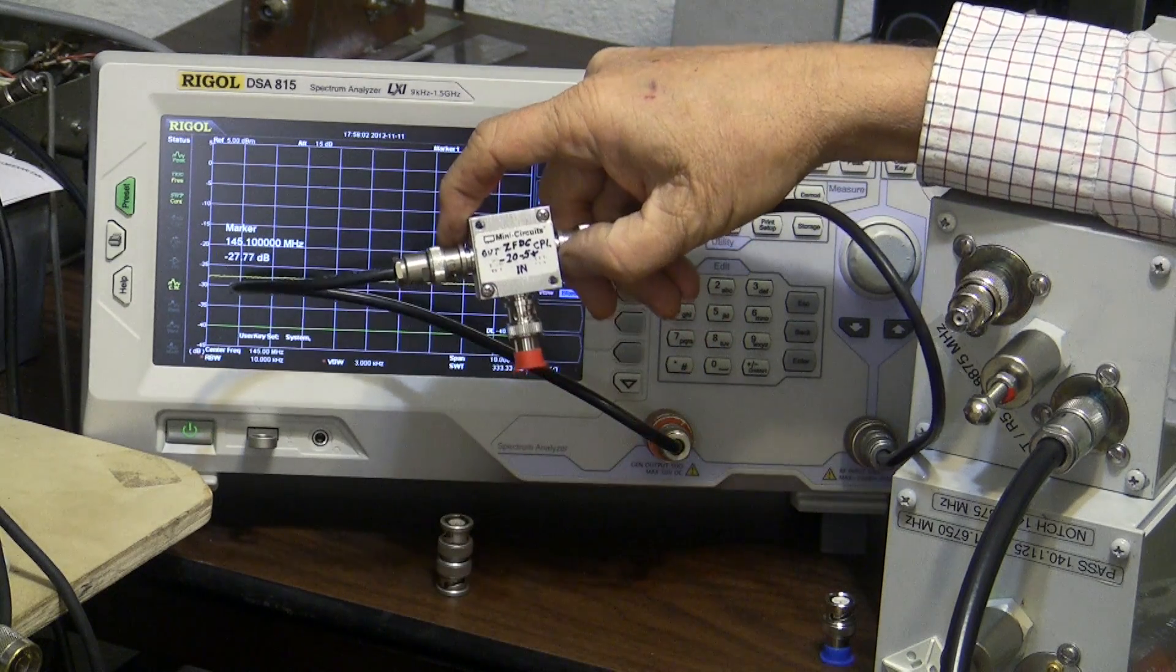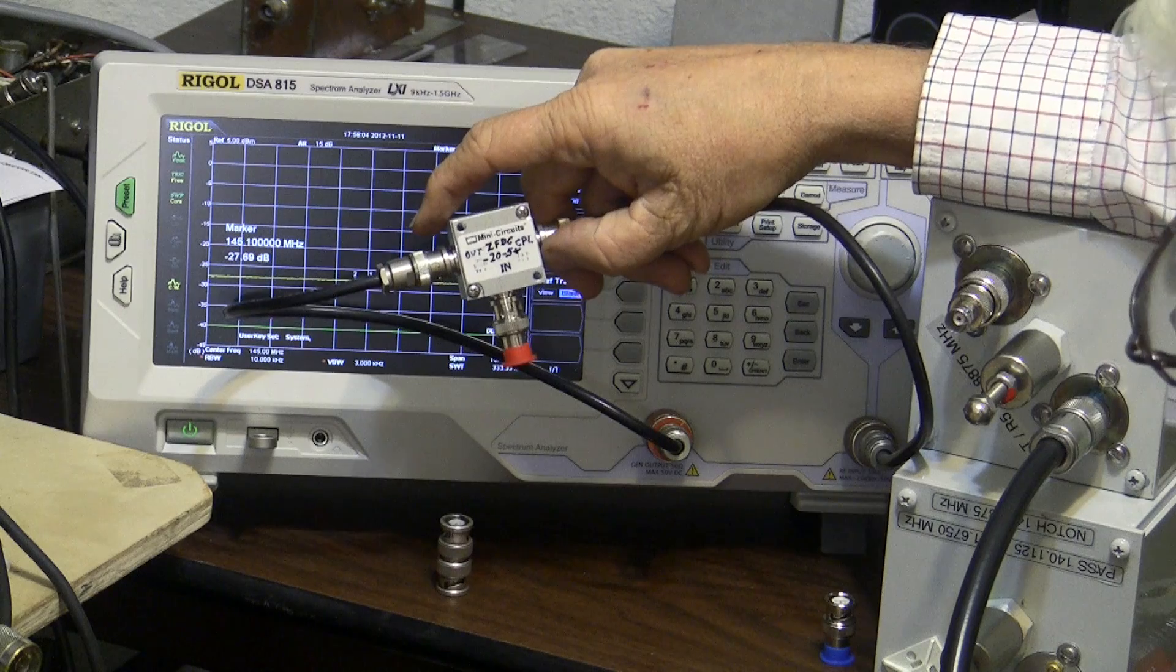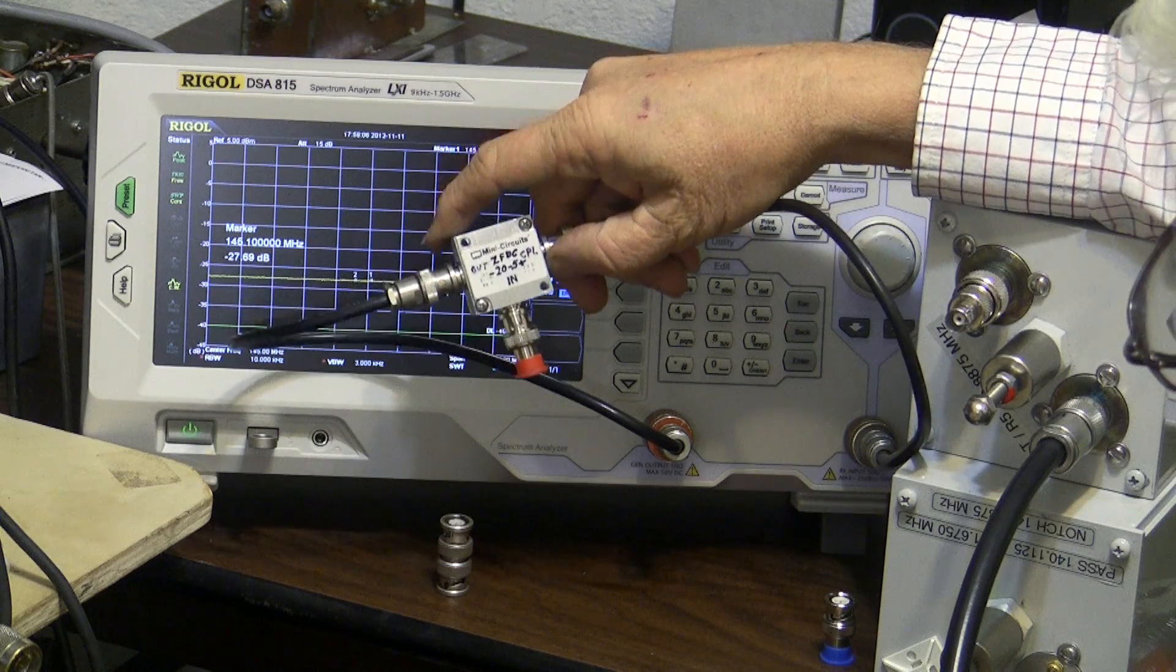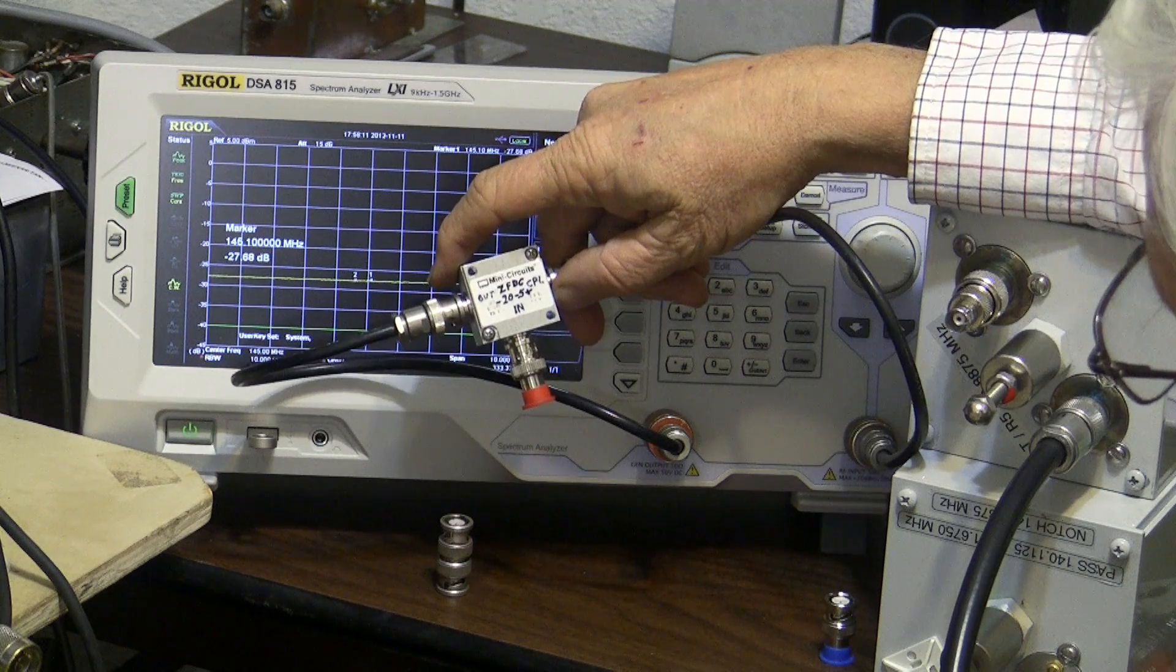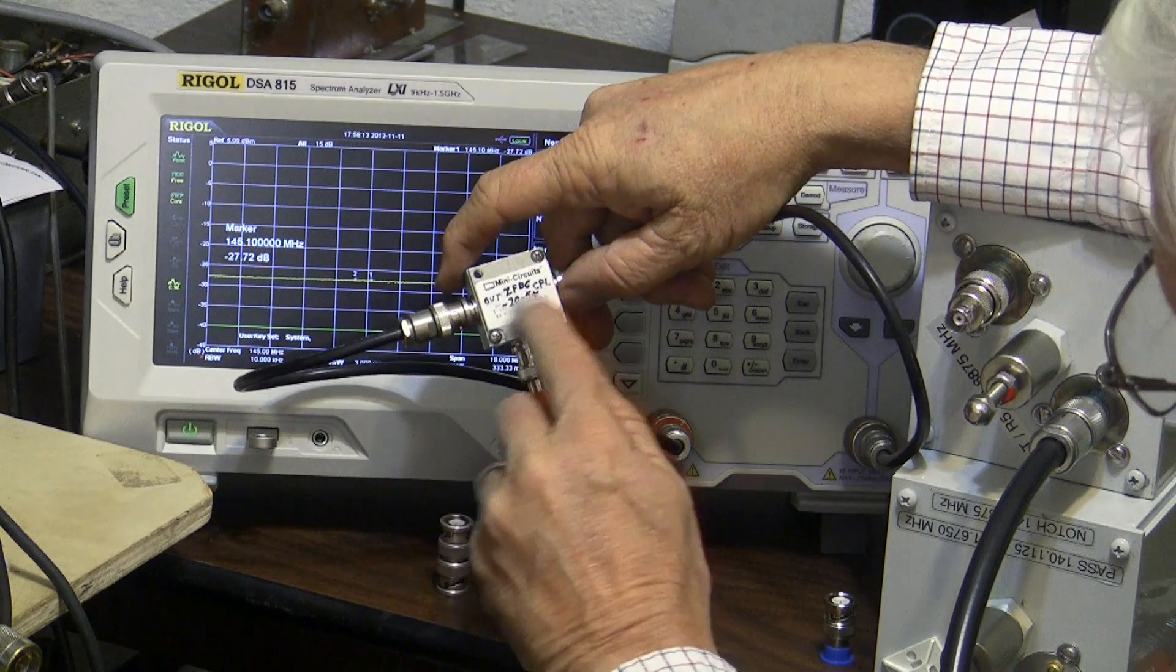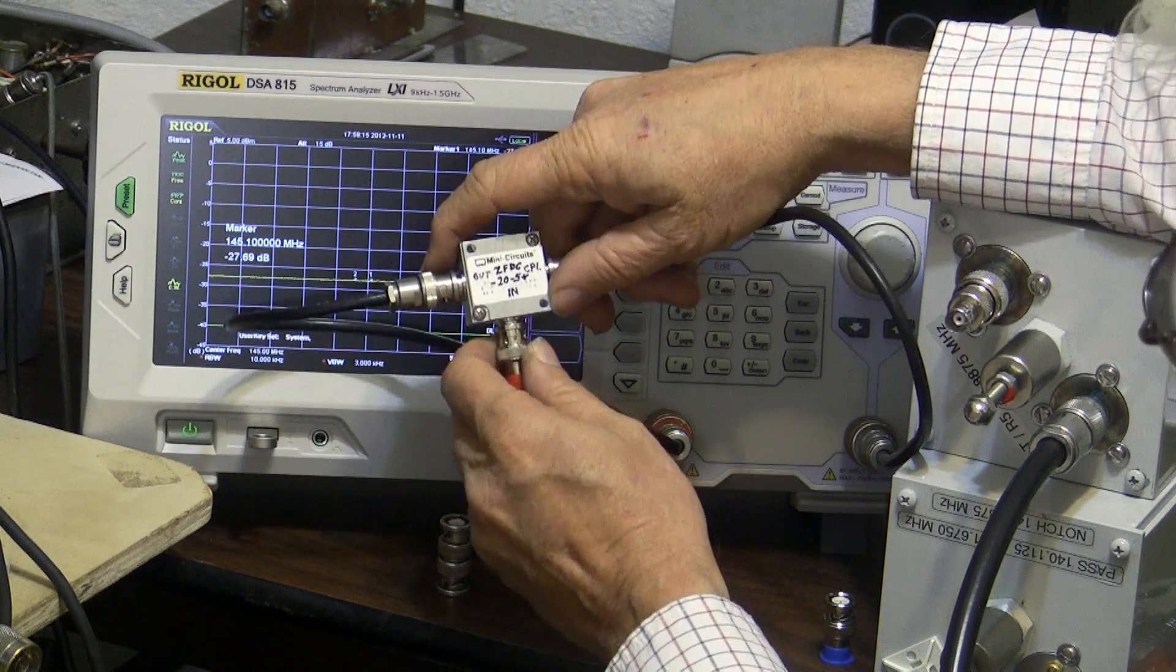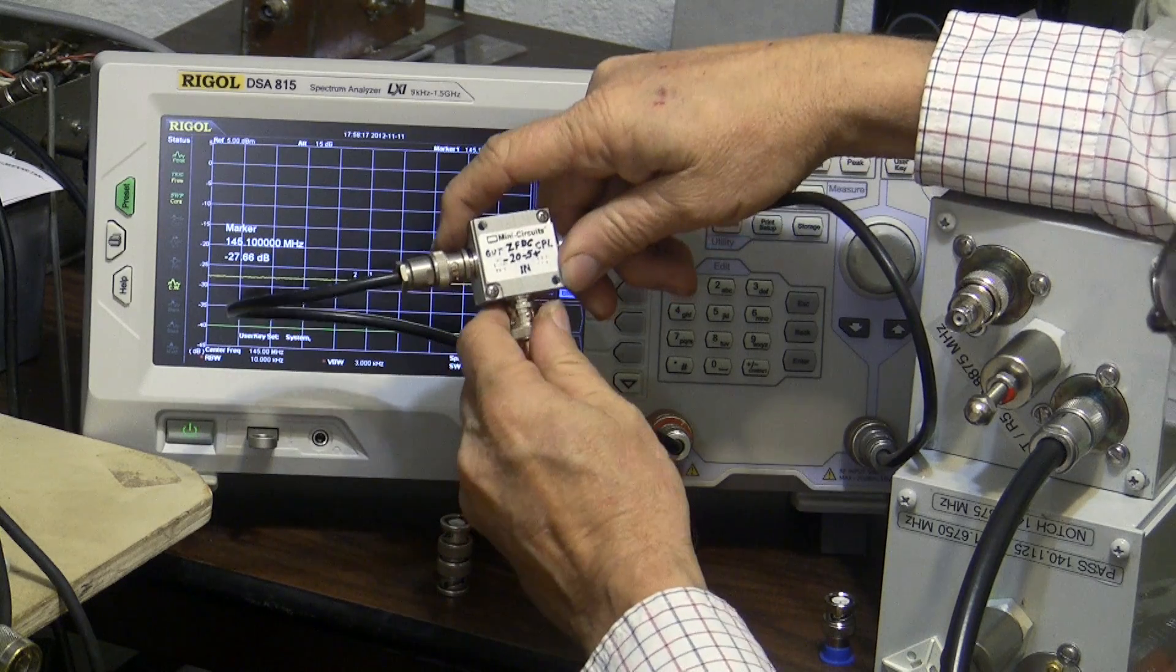You'll notice the writing on here, Mini-Circuits, somewhere along the line somebody got cost reduction happy in these labels. They're really crappy these days. They rub off, and so that's why you have a felt tip pen on here, not just so it's visible, because it wasn't visible at all.